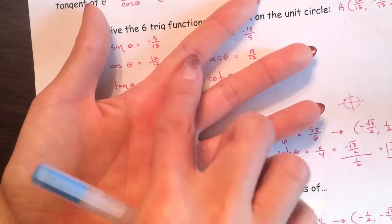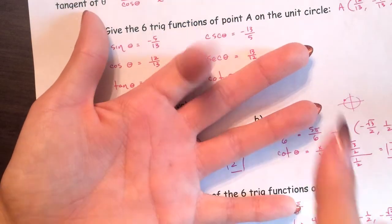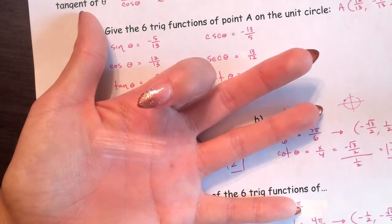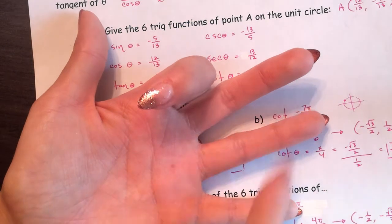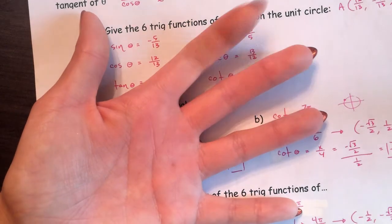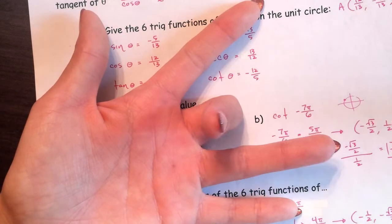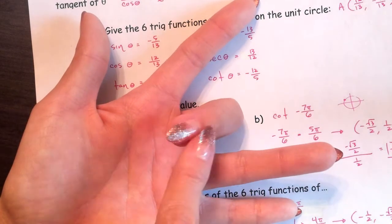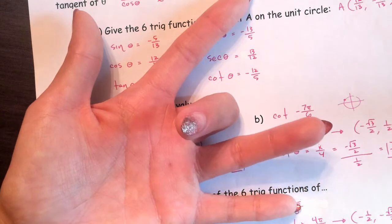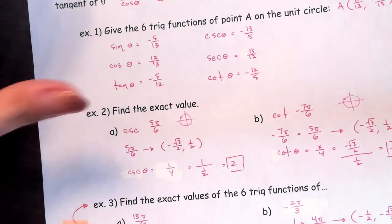Remember: 60 degrees gives coordinates 1/2, comma root 3 over 2. And 45 degrees gives root 2 over 2, comma root 2 over 2.